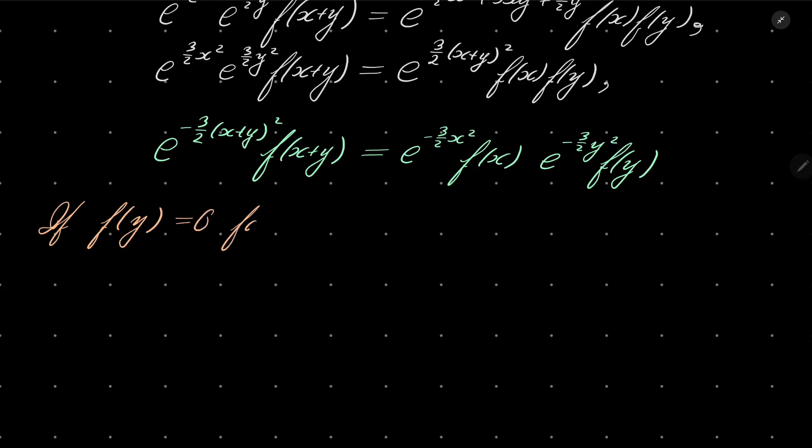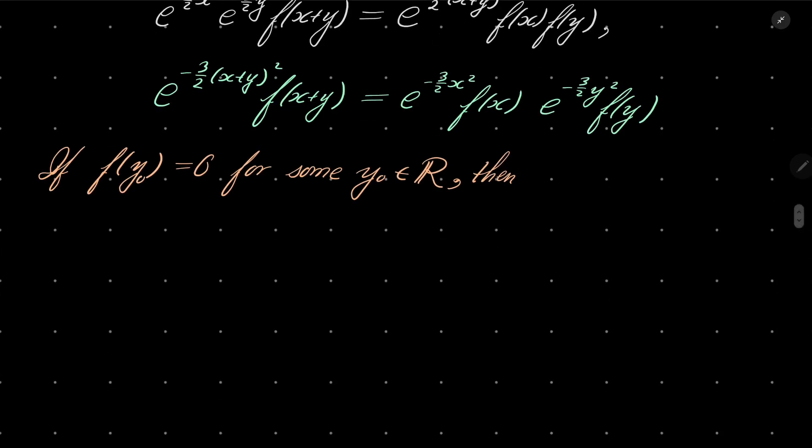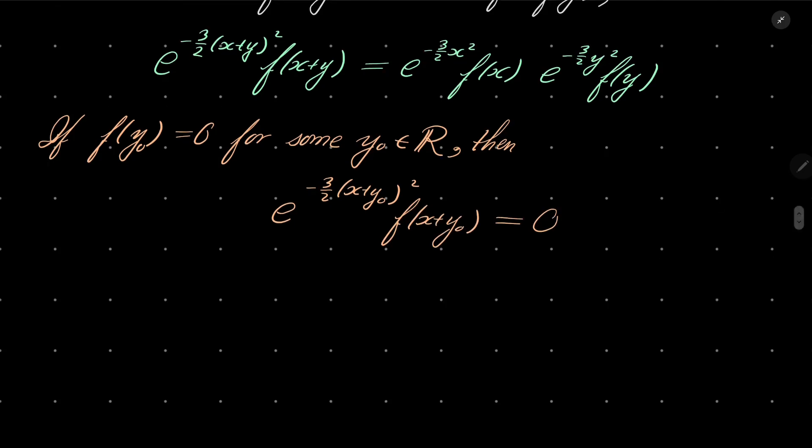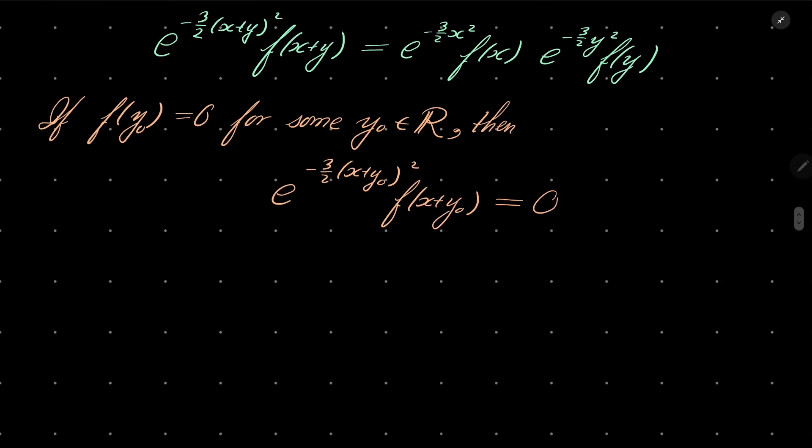So if f(y) equals 0 for some y0, let's say y0, then what do we have? We have e to the power minus 3 over 2(x+y0) squared f(x+y0), and on the right hand side we have 0. So in other words, because x is arbitrary, our function must be constantly 0, i.e. f is constantly 0.